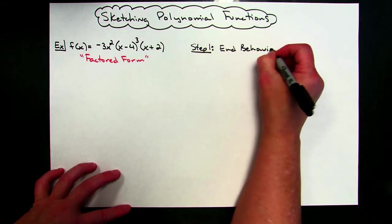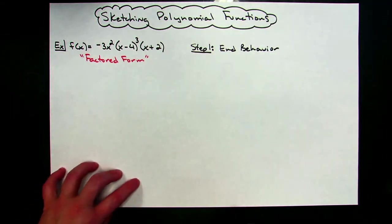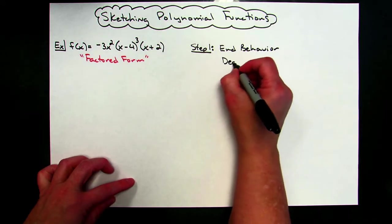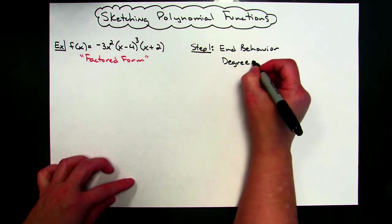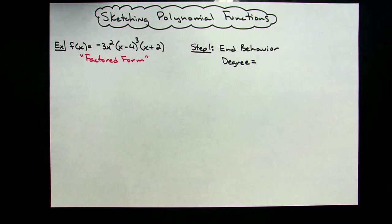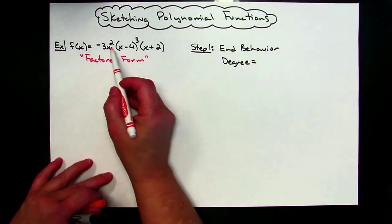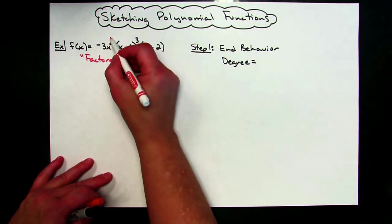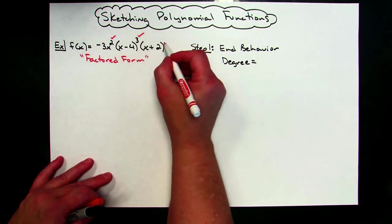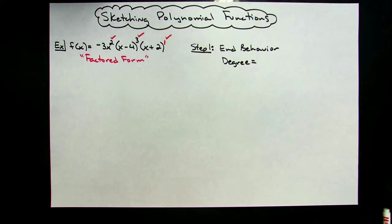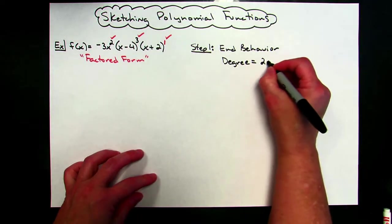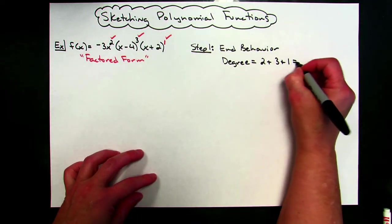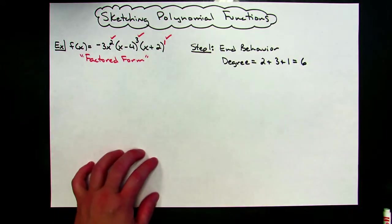In order to look at end behavior, I need to look at my degree. And if you recall how to find the degree of a factored polynomial, you come over here and you look at each of the exponents, and you add them up, and then you also have to realize there's the imaginary one on that one right there. So I'm going to be adding two plus three plus one. That's going to give me a degree of six.